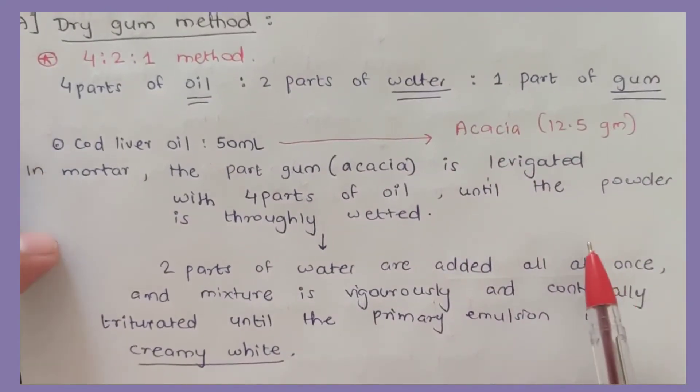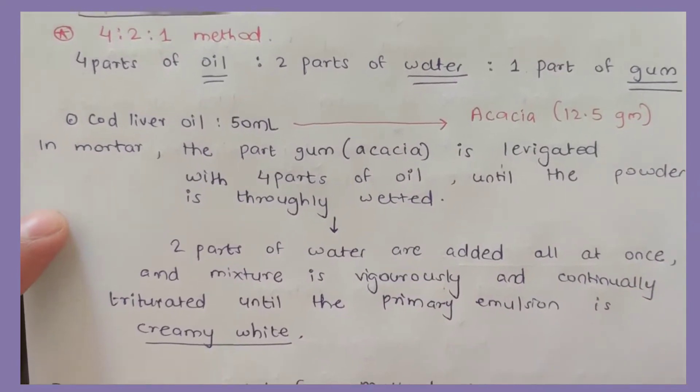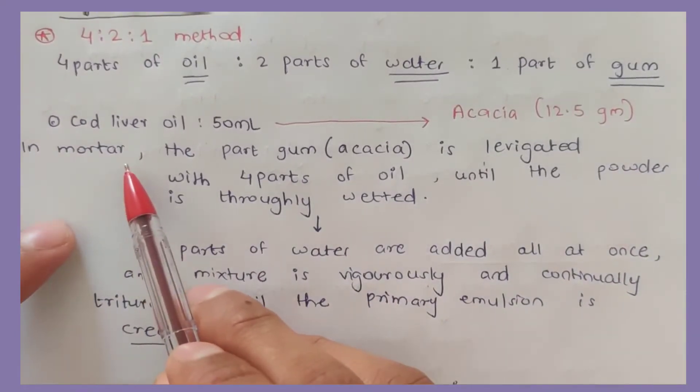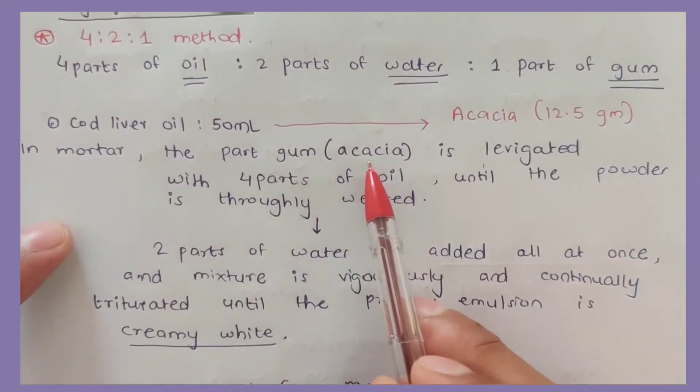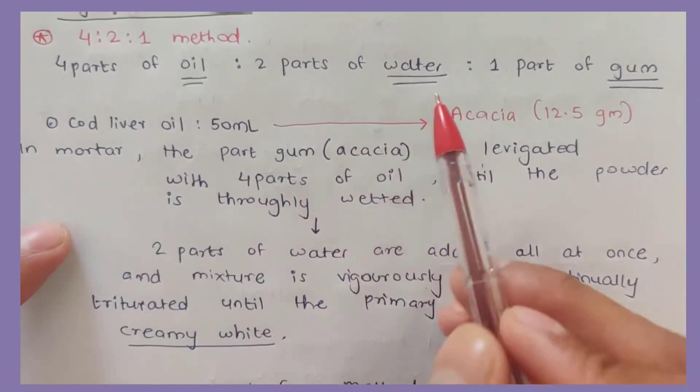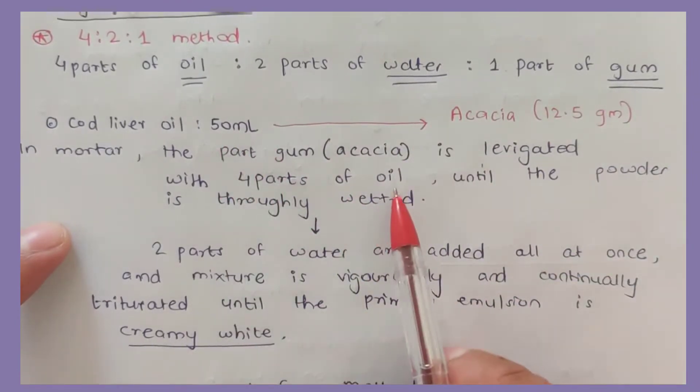How to do this: First, take a mortar. The part of gum, acacia, is levigated in four parts of oil - one part of gum in four parts of oil - until the powder is thoroughly wetted.